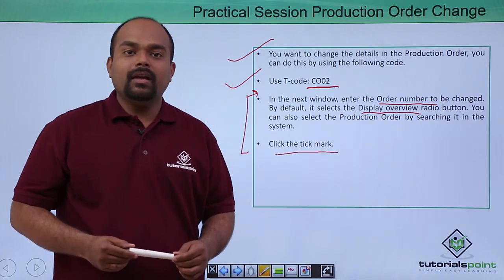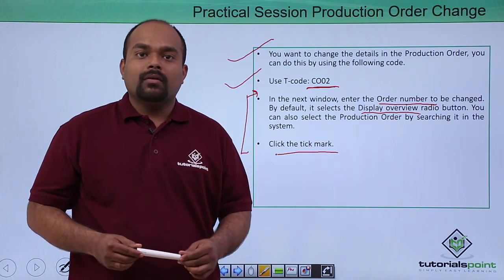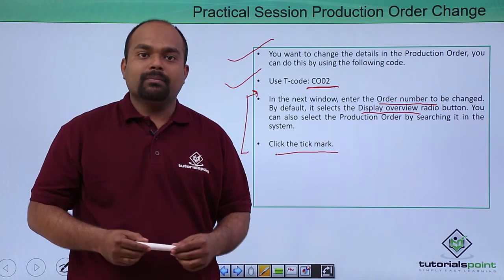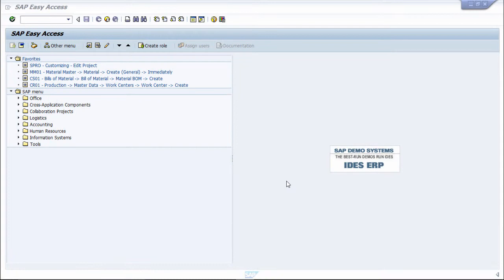Now practical, we are going to be seeing how the production order change will be done in SAP PP. In this practical, we will see production order change. Transaction code will be used as CO02, enter.